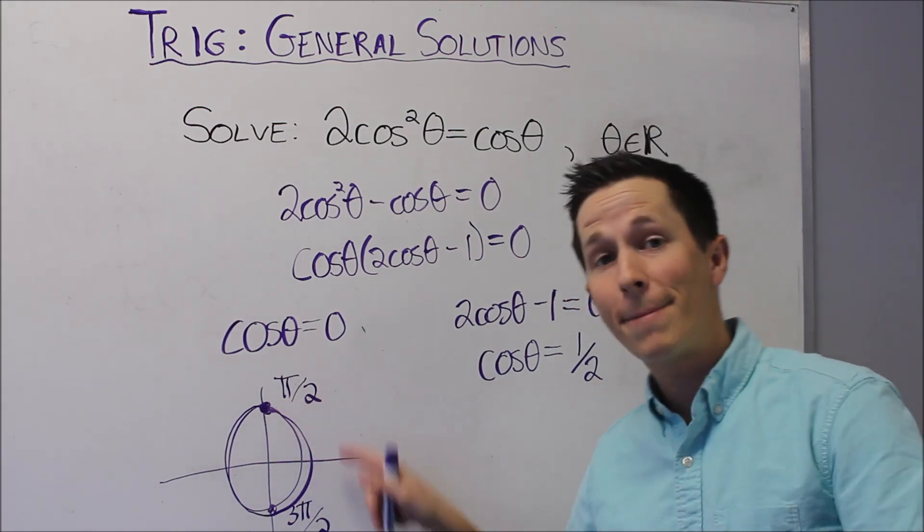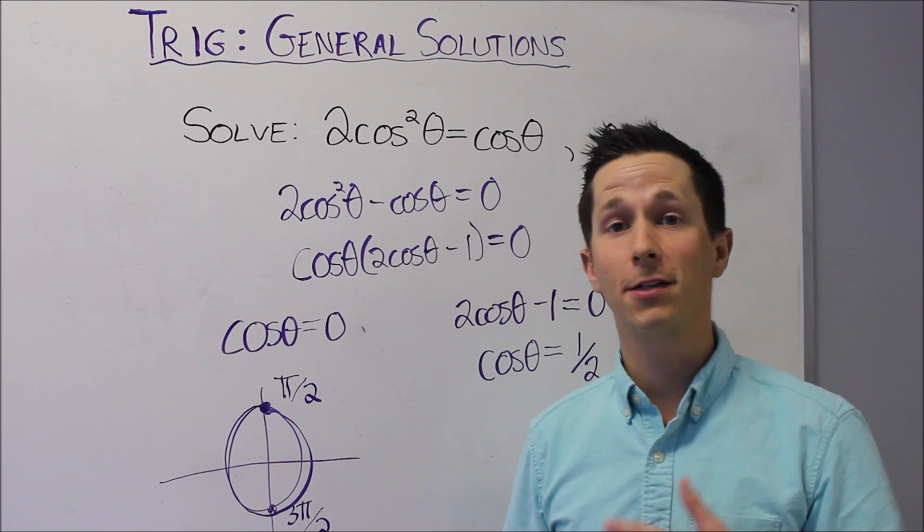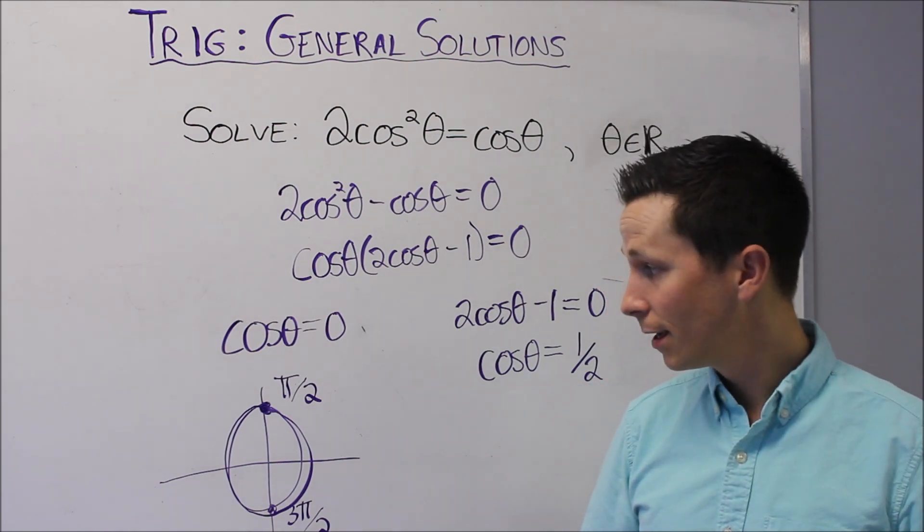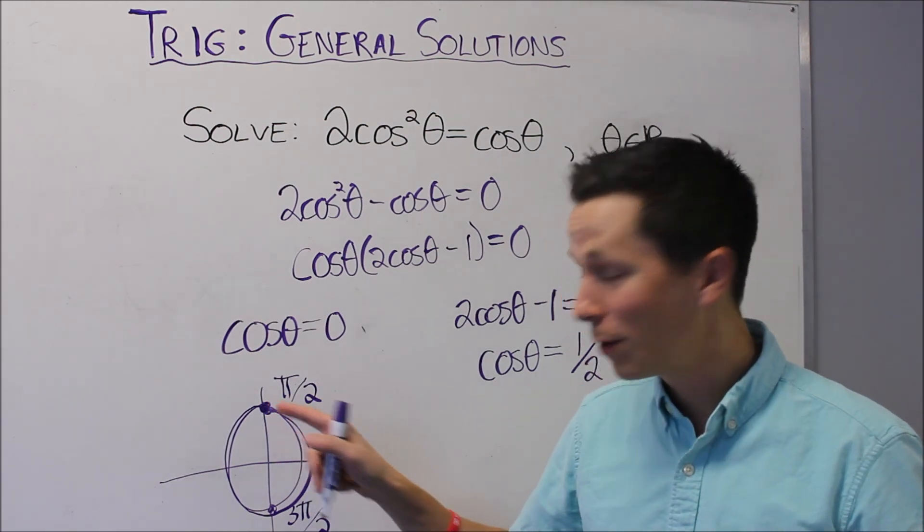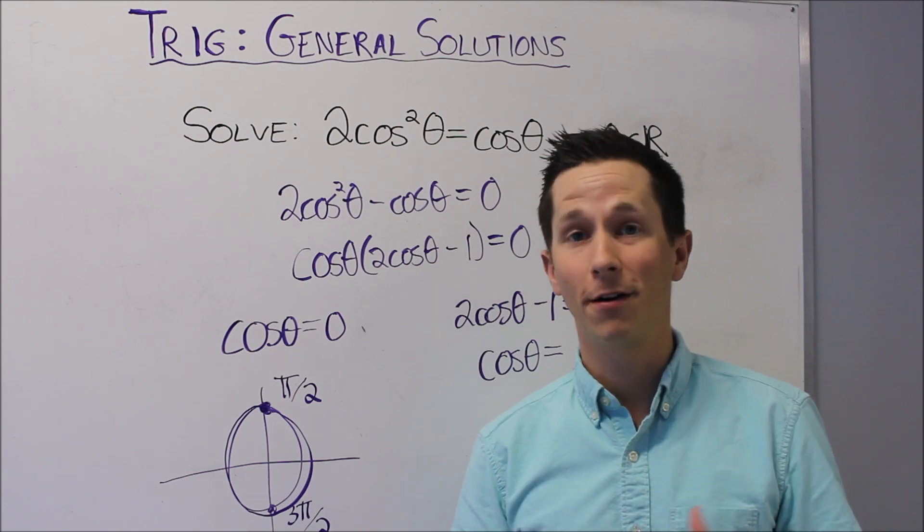Likewise, you could go backwards 2π, so minus 2π. However, we actually don't need to go, we can come up with an even better general solution.